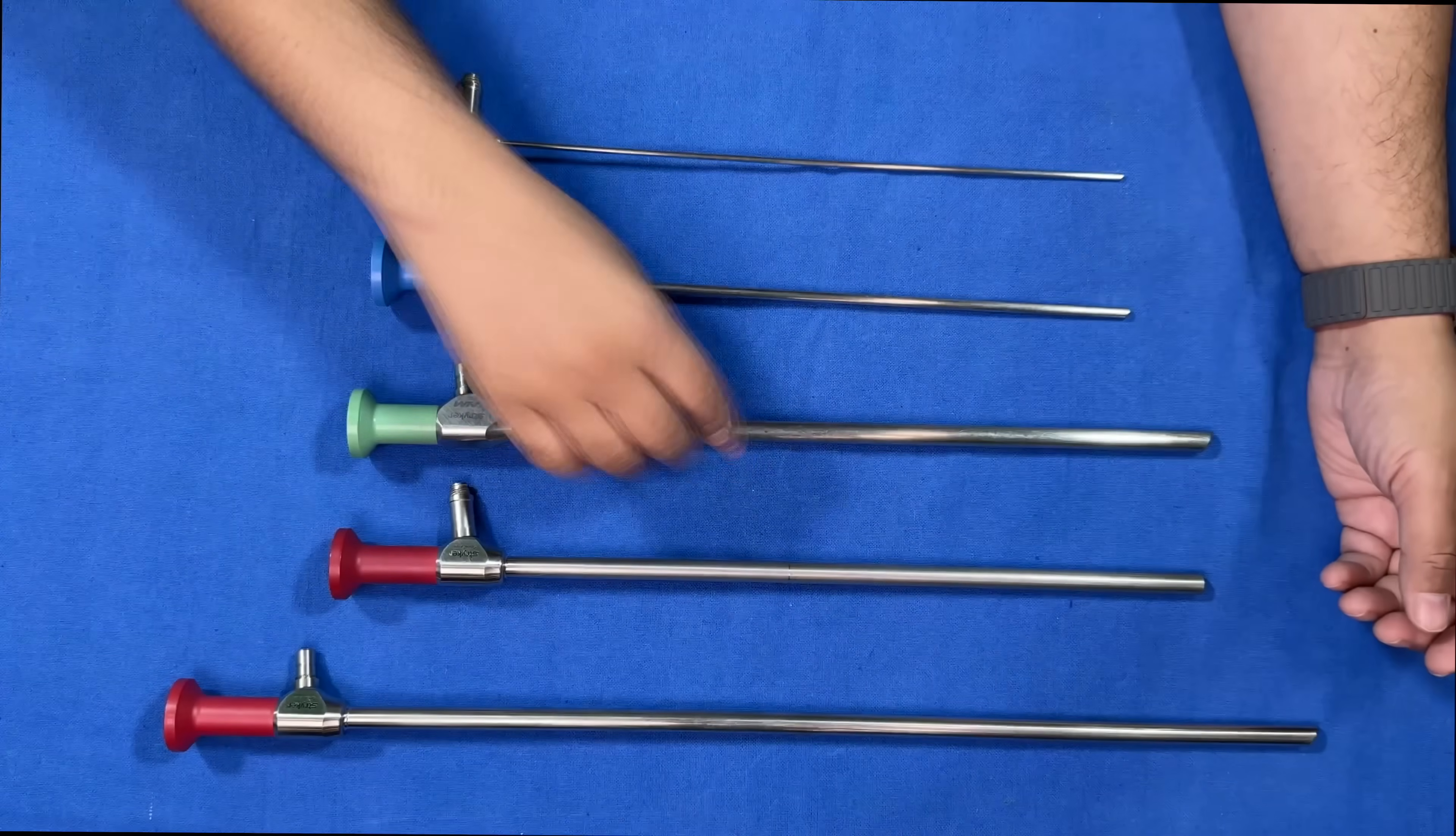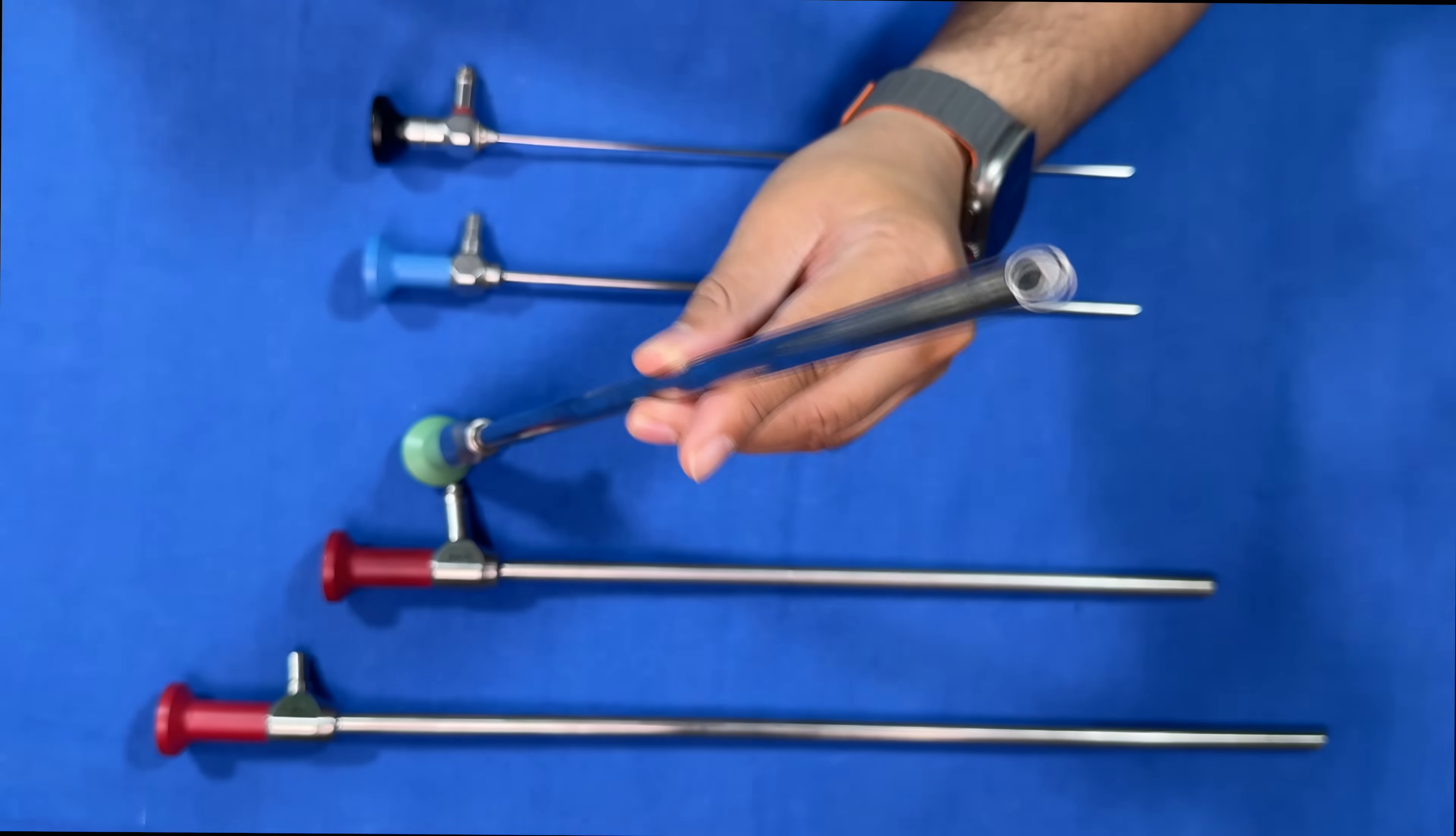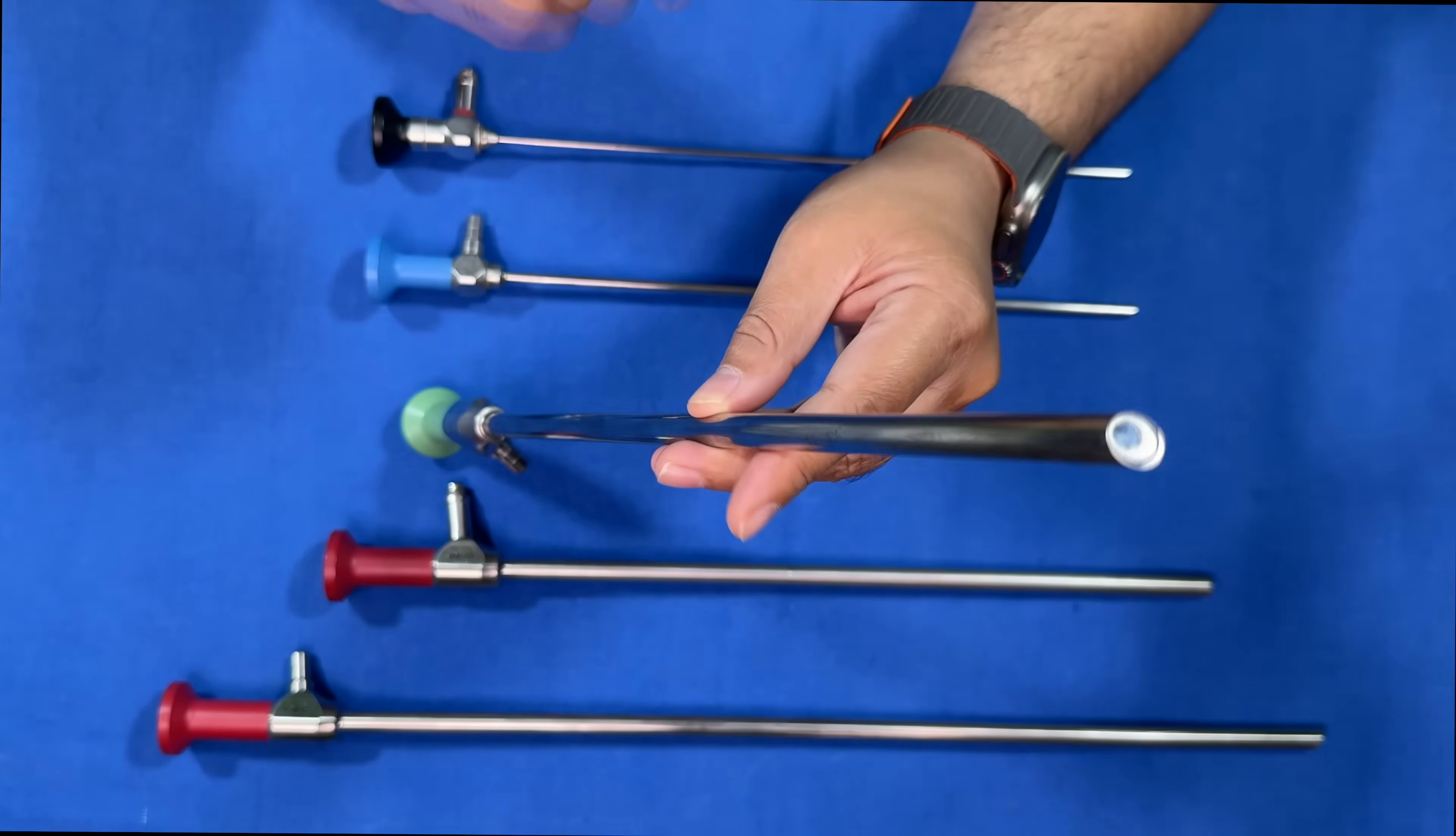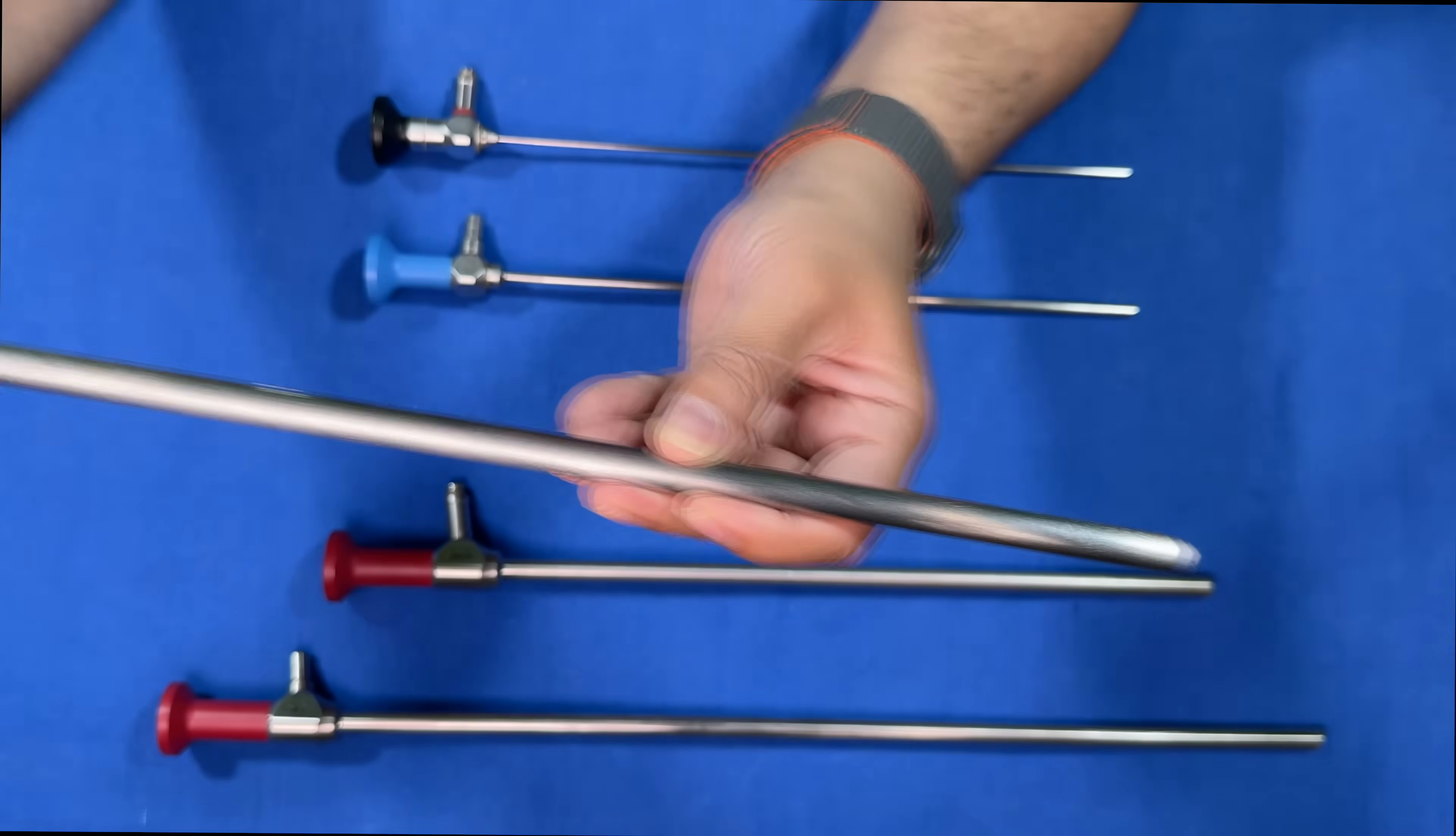These ones have angles. If you see, this scope is actually cut at an angle of 30 degrees. You may have 30 degrees or even 45 degrees, but the most commonly used is 30 degrees. The advantage is that when you have a straight scope, you tend to look a little downwards.